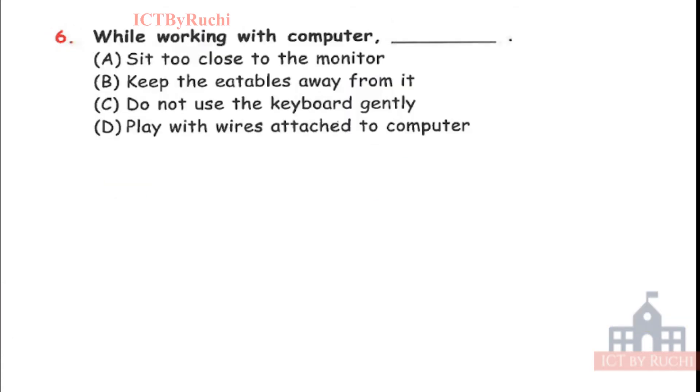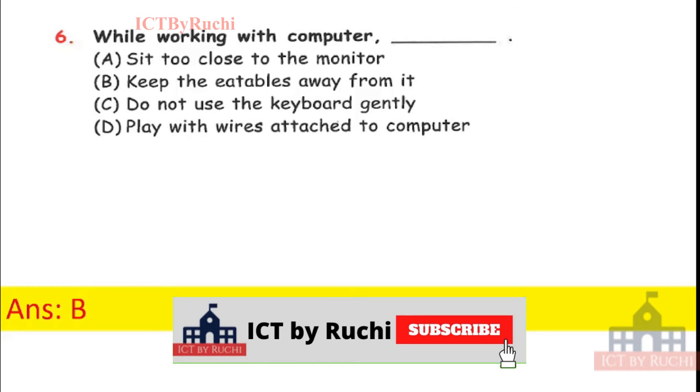Next question. While working with the computer: A. Sit too close to the monitor, B. Keep the e-tables away from it, C. Do not use the keyboard gently, or D. Play with wires attached to computer. It is a very basic good manners like guarding using the computer. So tell me the answer. Answer is B. We should never sit too close to the monitor. The e-tables should be kept away. Okay. And we should use the keyboard very gently. We should not play with the wires because it can give us current. Okay.